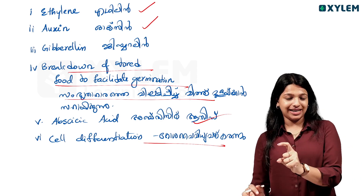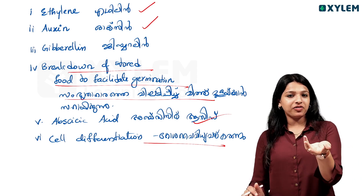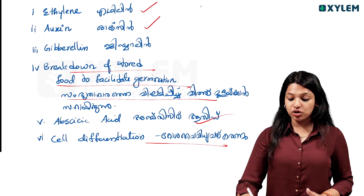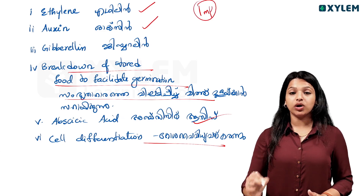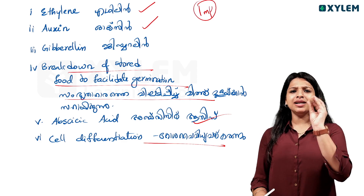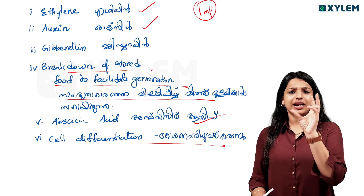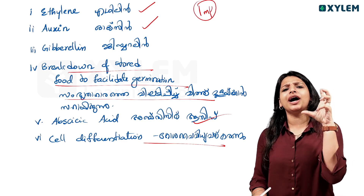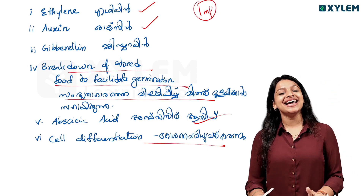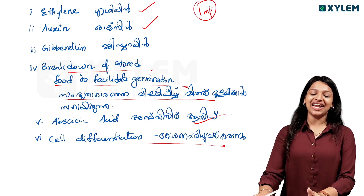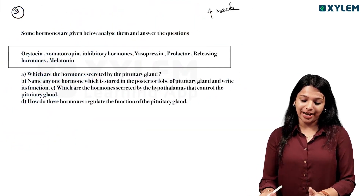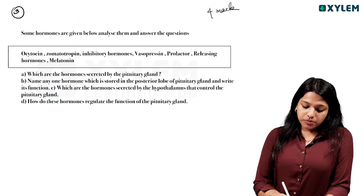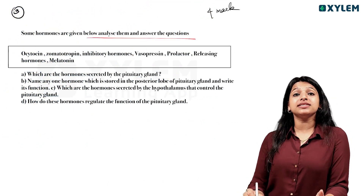We have a flowchart and match-the-following and table-fill type questions. We have to answer questions about these hormones. Now we have two questions — we will ask three marks and six marks. Some hormones are given below — analyze them and answer the question.